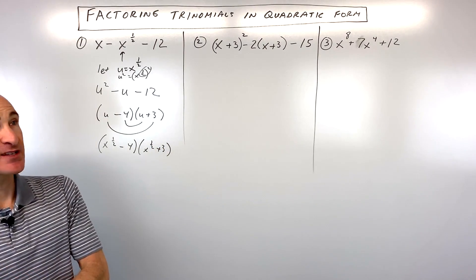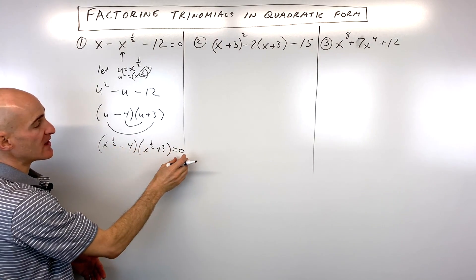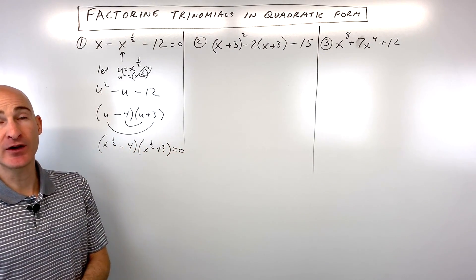Now, if you wanted to take it one step further, if this was an equation, like it was equal to zero, then you could take each group and set each group equal to zero and solve that equation.